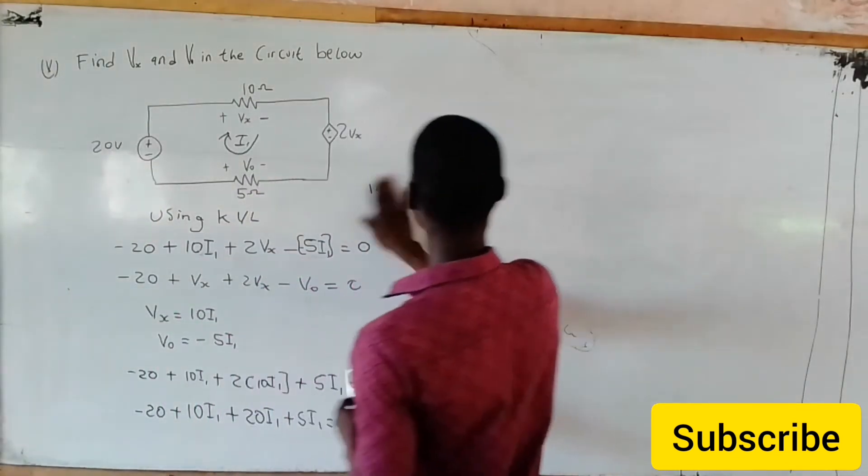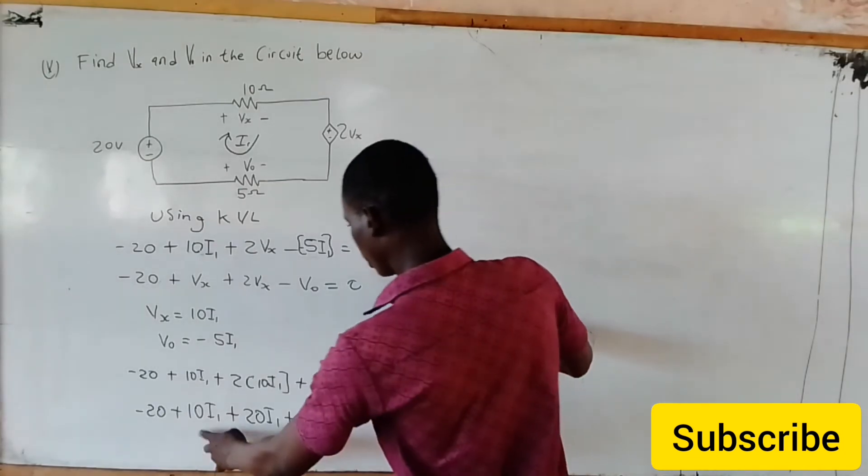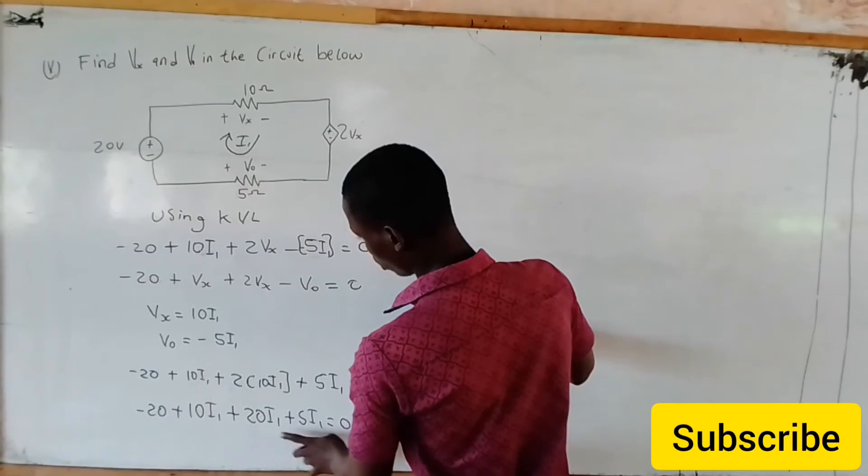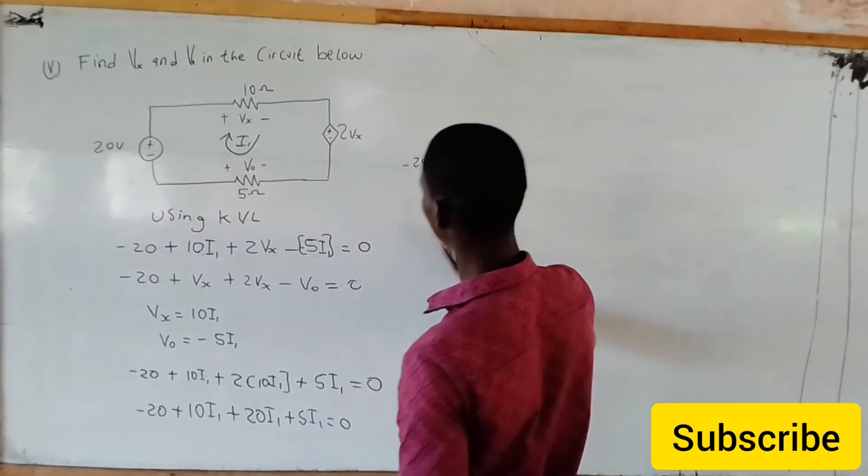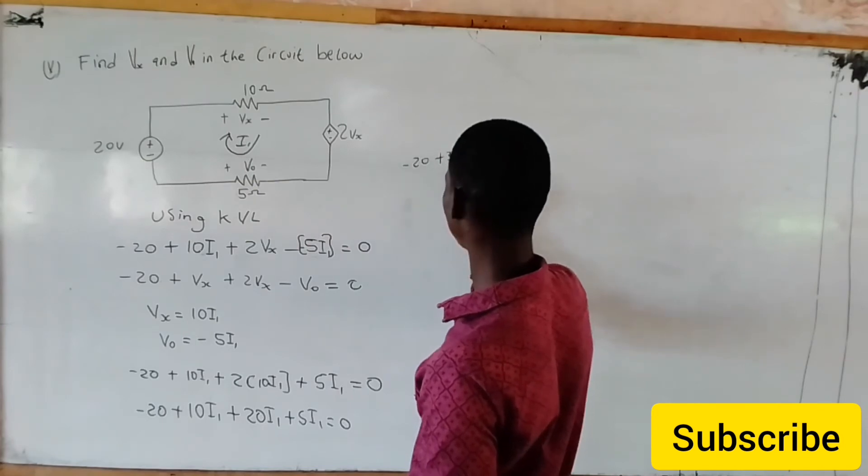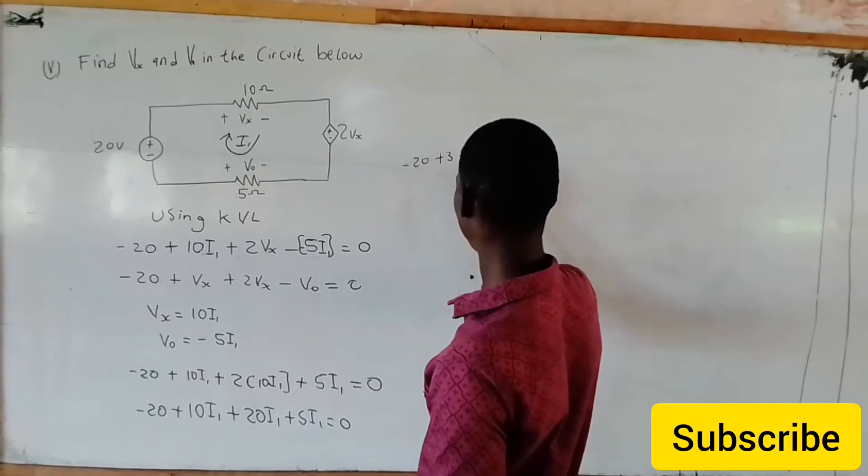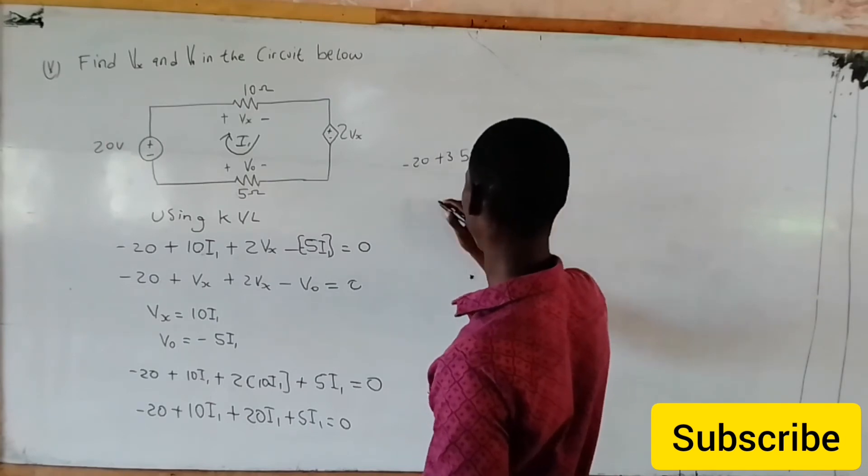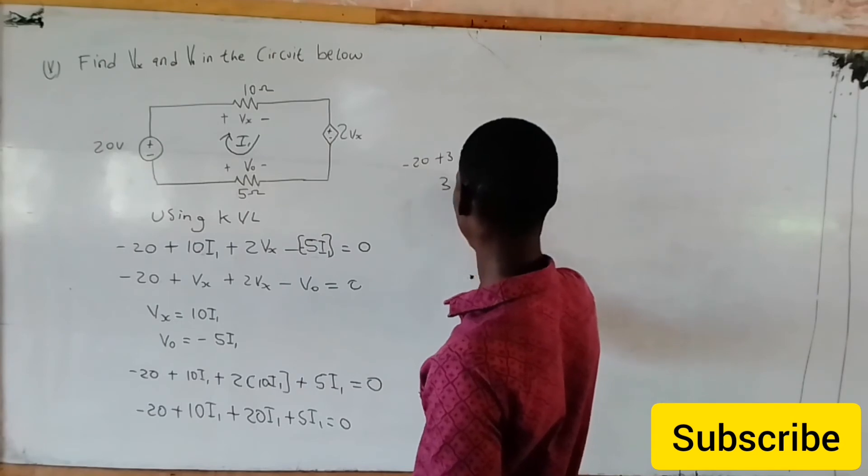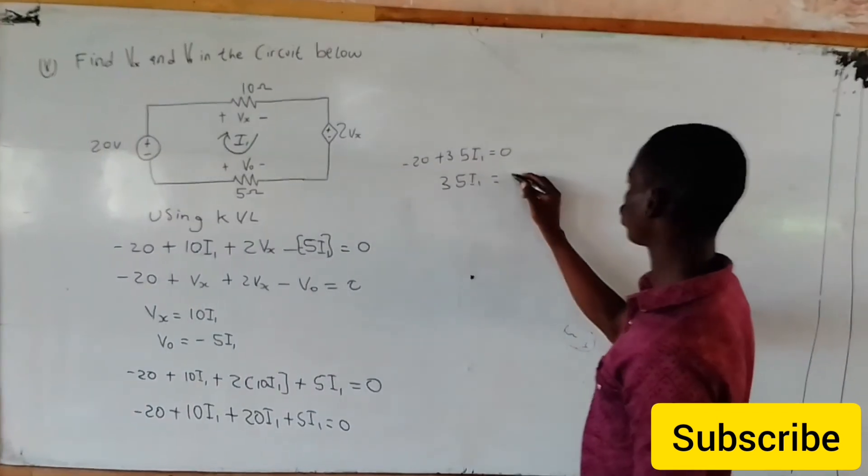So from here we have minus 20, 10I1 plus 20I1 plus 5I1, plus 35I1. So plus 35I1 equals 20. Take this to the other side.